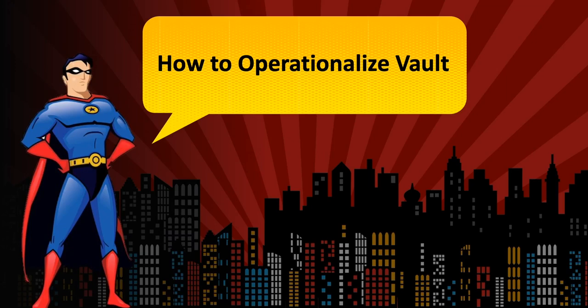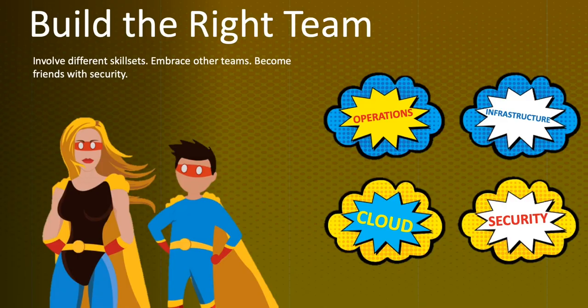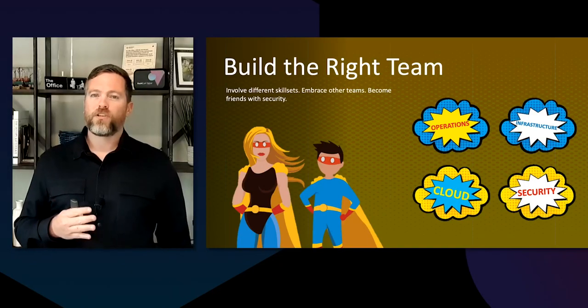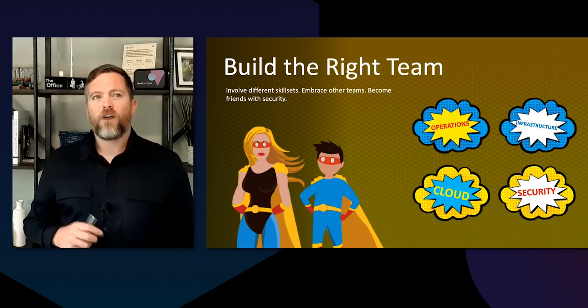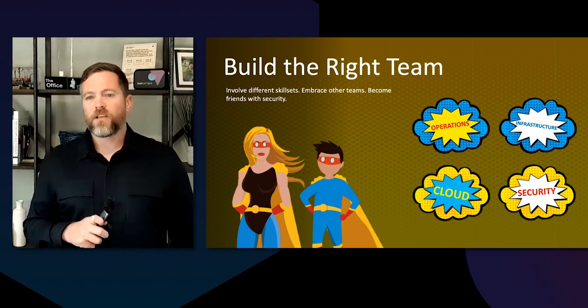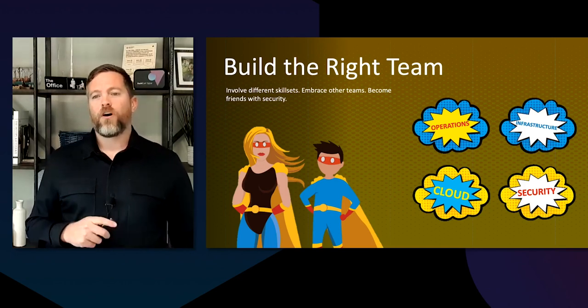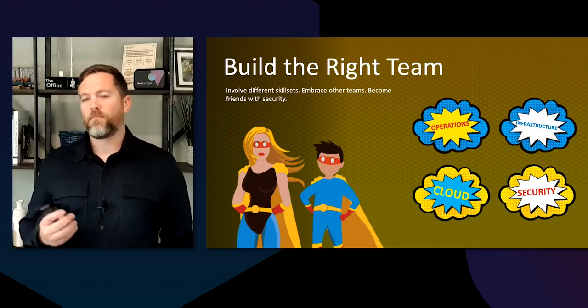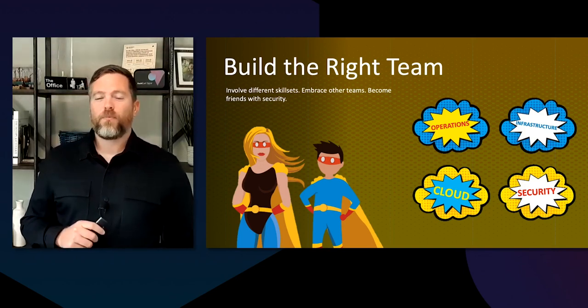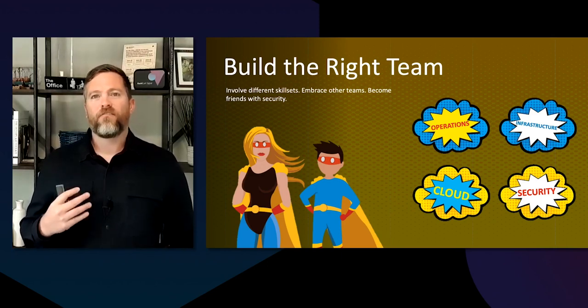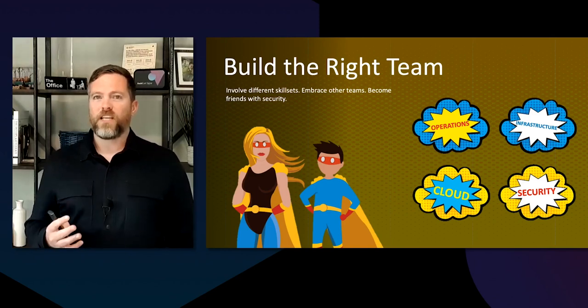The first thing I want to talk about is how to operationalize Vault. The first thing you want to do is build the right team for your organization. I've seen customers where maybe one or two people get up to speed on Vault and they're the ones who want to run, manage, and integrate with their applications. But oftentimes that one or two person team isn't necessarily enough. We want to make sure we're involving different skill sets. Embrace other teams within the organization — operations, infrastructure, and cloud teams all need to be involved, because the infrastructure team may own the Vault infrastructure: the VMs if on-premises or instances if running in the cloud.